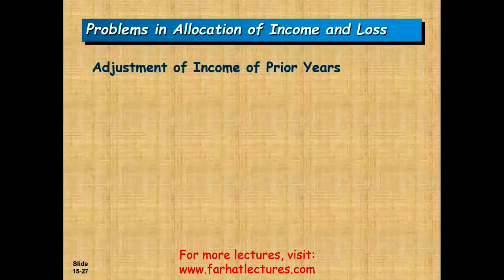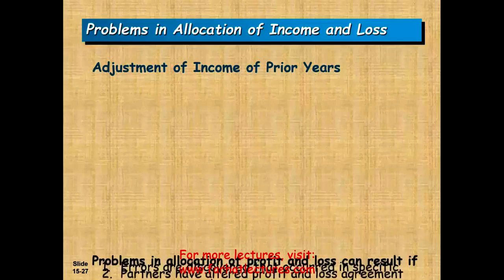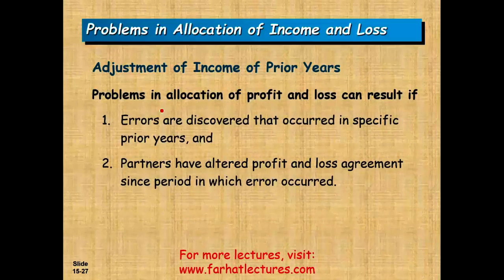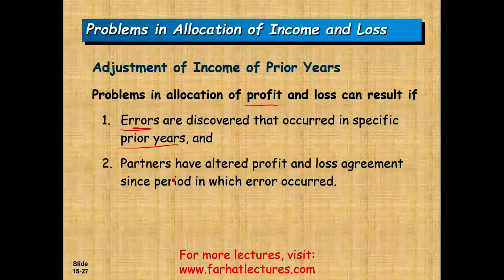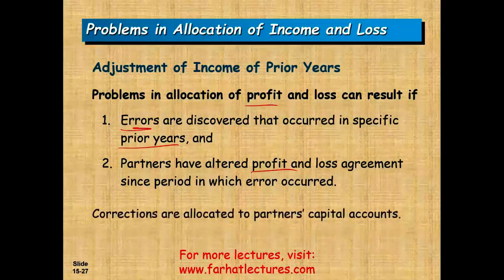Regarding adjustment to net income: if errors from prior years are discovered and partners have altered their profit-and-loss agreement since that period, you cannot restate prior years. Instead, you must allocate the error to the partners' capital accounts — increasing or decreasing them depending on the nature of the error.